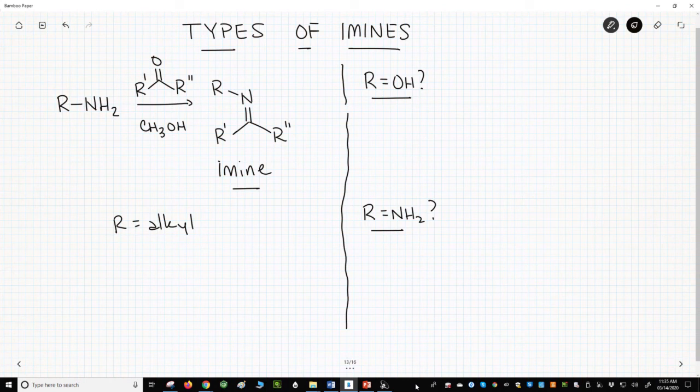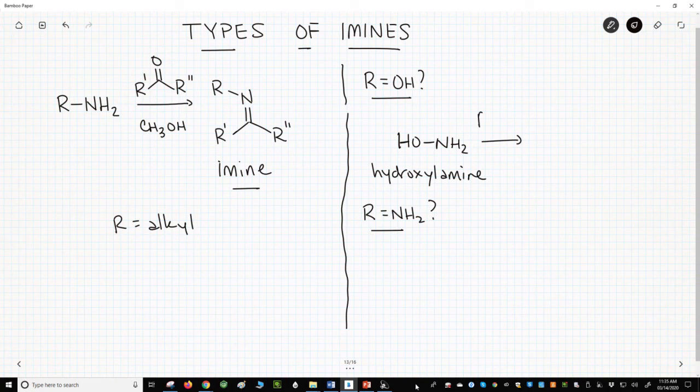Some imines are more stable and the stability can be linked to the R group on the nitrogen. If the R group on the nitrogen is an OH, then the amine is called hydroxylamine.